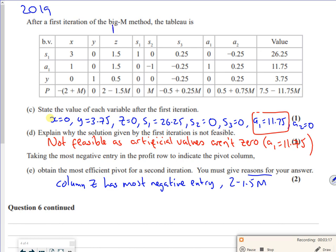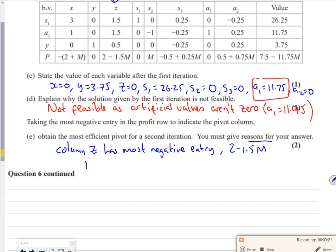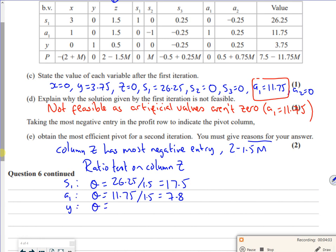So I'm looking down column Z, so now I'm going to do my ratio test from column Z. The first one for S1 will be 26.25 divided by 1.5, which gives us 17.5. For A1, my ratio test will be 11.75 over 1.5, which gives 7.8. For Y, my ratio test will be 3.75 divided by 1.5, which is 7.5.